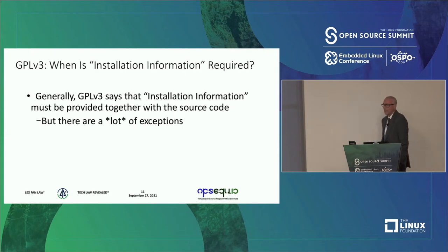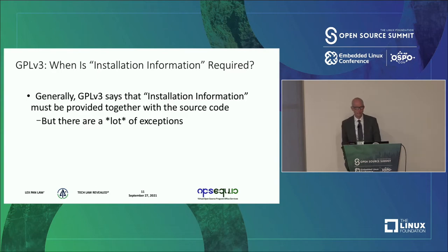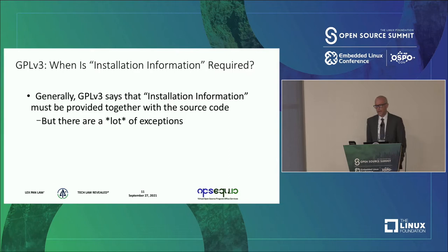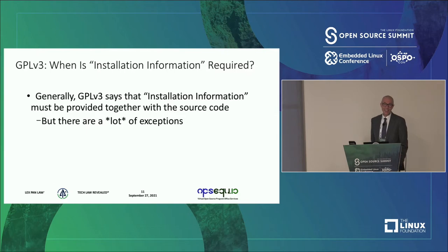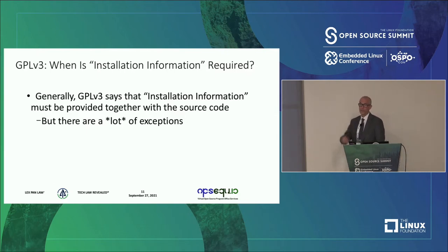The provision put in GPL v3 seems to be a fairly comprehensive list of all sorts of things that somebody might need to modify code and reinstall it onto a device — essentially a laundry list of things to ensure the end user could take the source code, modify it, and reinstall it on the device. Now let's talk about this installation information requirement, because it's not as straightforward as you may think on first blush. There are actually a lot of exceptions.